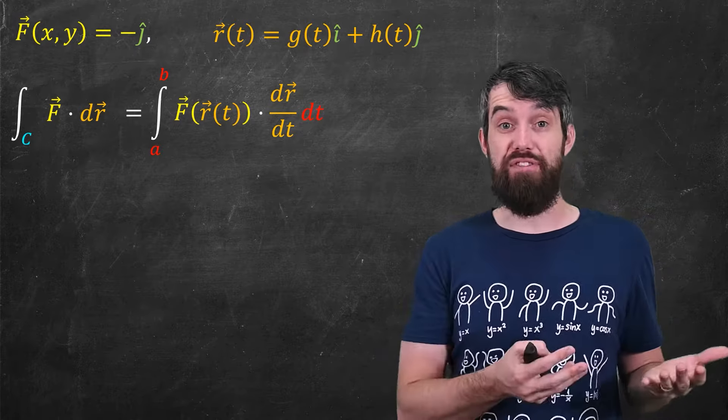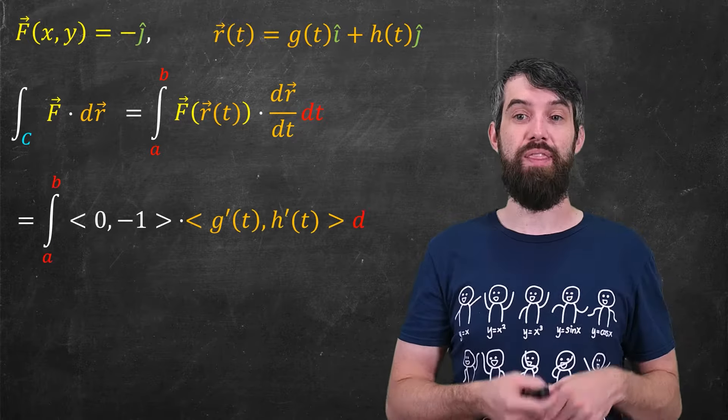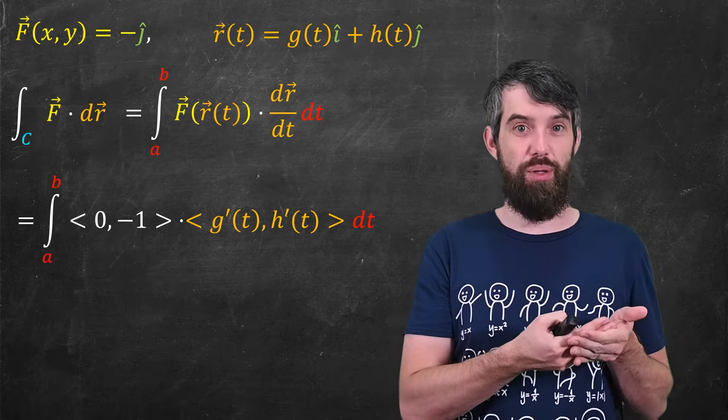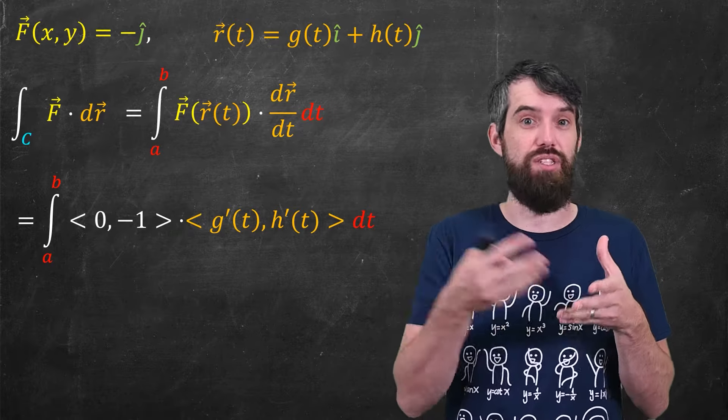Well, I can compute this because I know what the f is and I know what the r is. So plugging that in, the f is the vector that's 0 in the i hat and then minus 1 in the j hat, so I'll just write it in shorthand as 0 and minus 1.